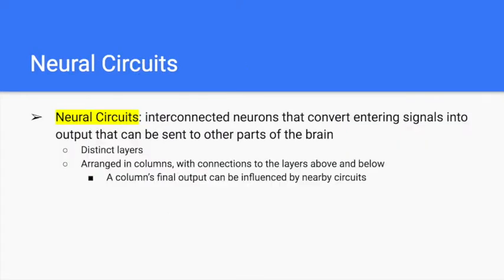Neural circuits are interconnected neurons that convert entering signals into output that can be sent to other parts of the brain. They are arranged in distinct layers and in columns. Each column is a single chain, and each chain has connections to the layers above and below. As a result, a column's final output can be influenced by other nearby circuits. Because a neuron sums up all received signals before creating its own, the strength of neighboring circuit signals can dynamically change a neuron's response. This organization may help the brain react flexibly.